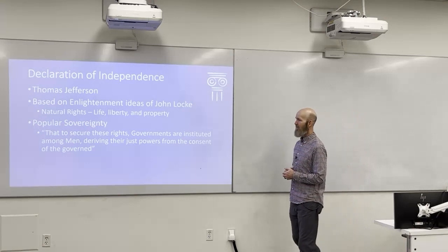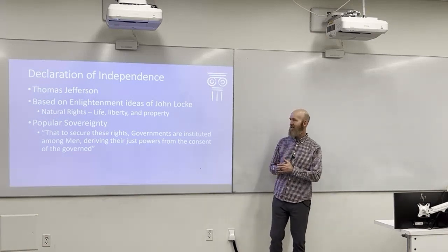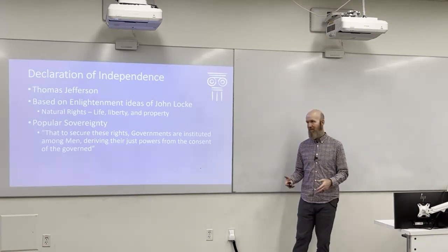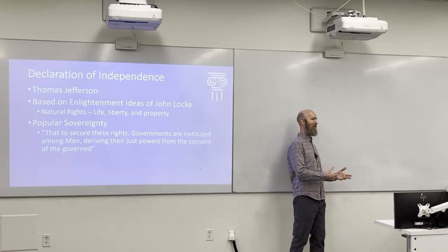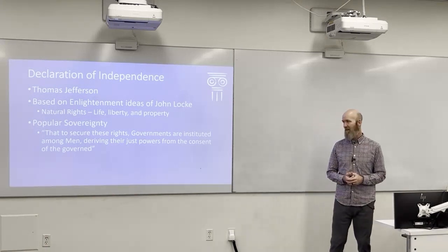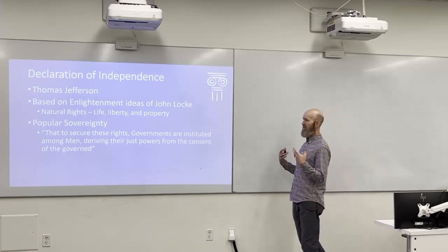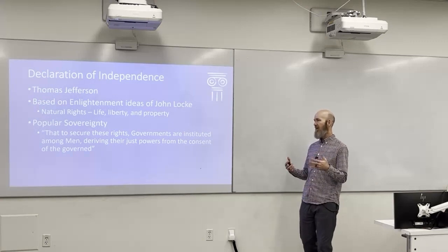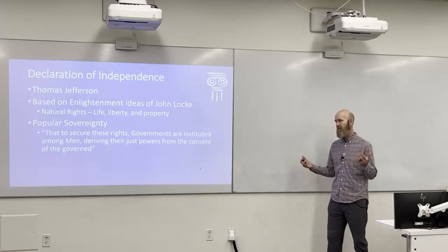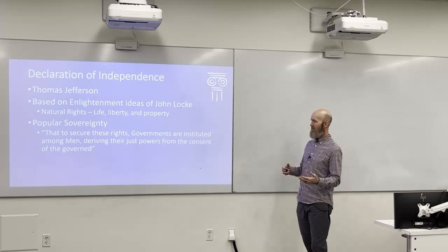The Declaration of Independence also exemplifies the concept of popular sovereignty — a phrase you need to know for the test. Popular means from the population, the people. Sovereignty means to be in control. So in our government, the people have the authority; the government gets its power from the people. In the Declaration of Independence, it says that people created governments to secure their natural rights, with rights coming from nature's God. It states that governments are instituted among men, deriving their just powers from the consent of the governed.